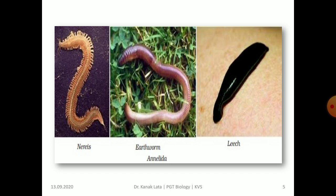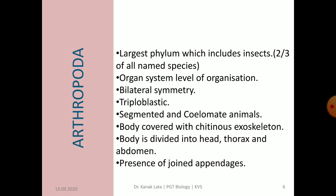Now let us see about the salient features of Arthropoda. Arthropoda is the largest phylum which includes insects. The arthropods have organ system level of organization. The symmetry is again bilateral in arthropods. The arthropods are developed from three germ layers, hence they are triploblastic — they have ectoderm, mesoderm as well as endoderm. They are also segmented and coelomate animals.